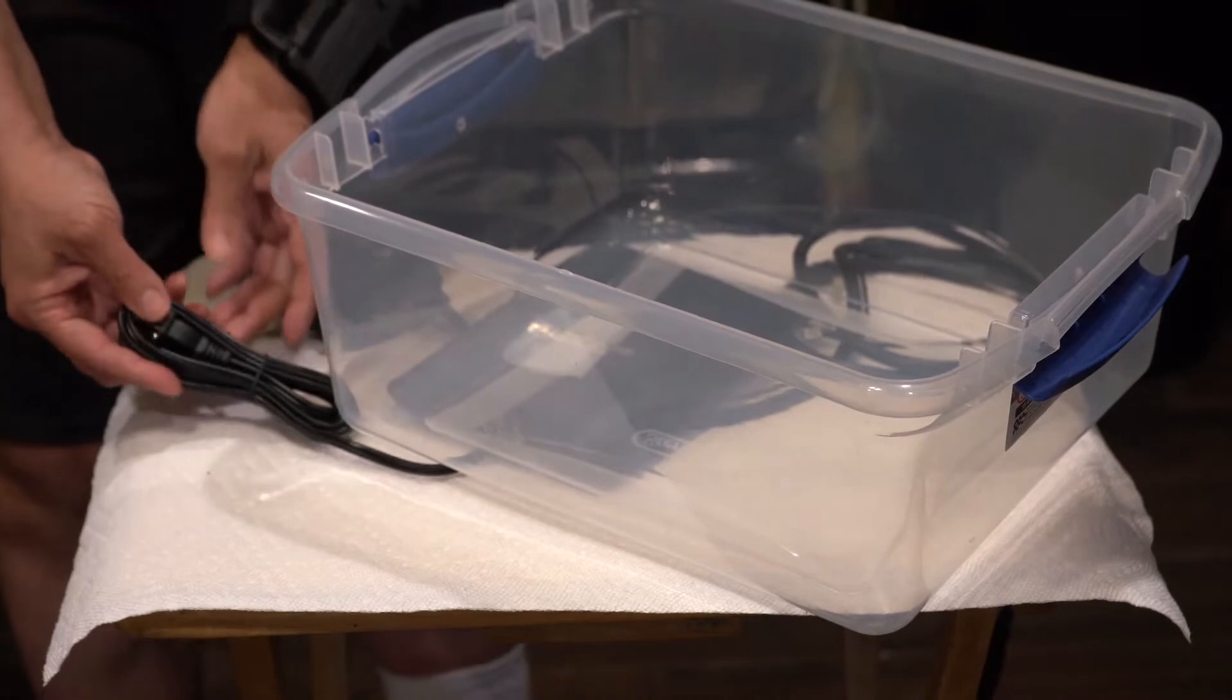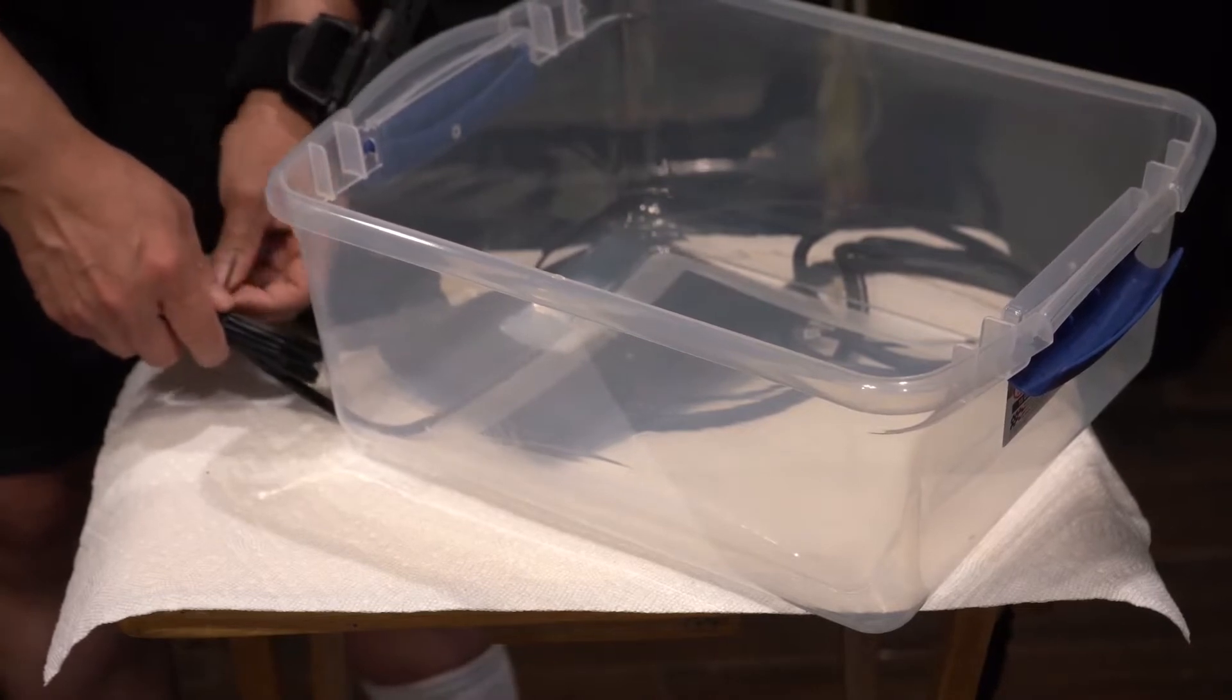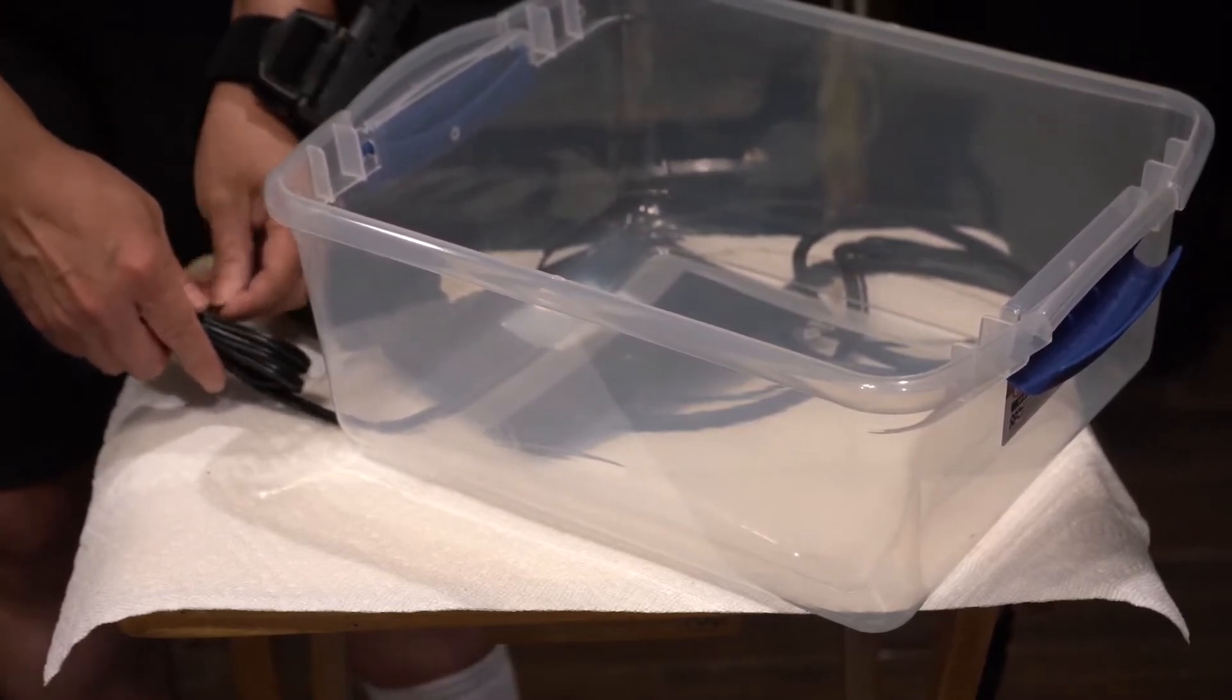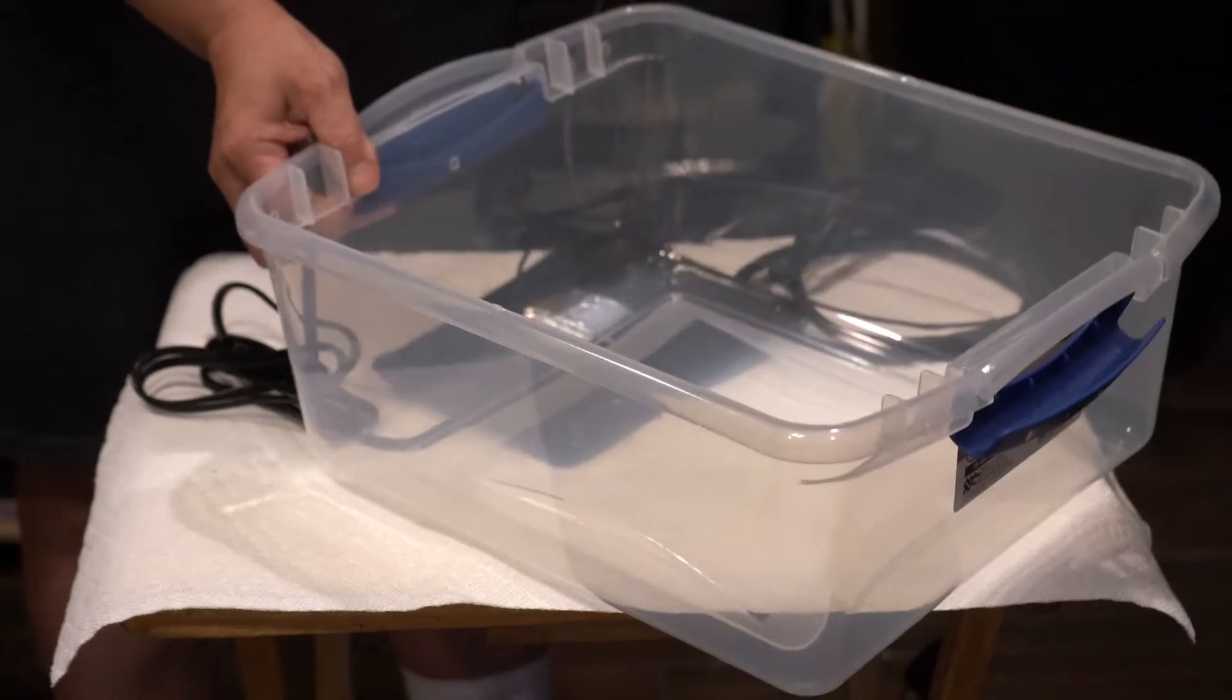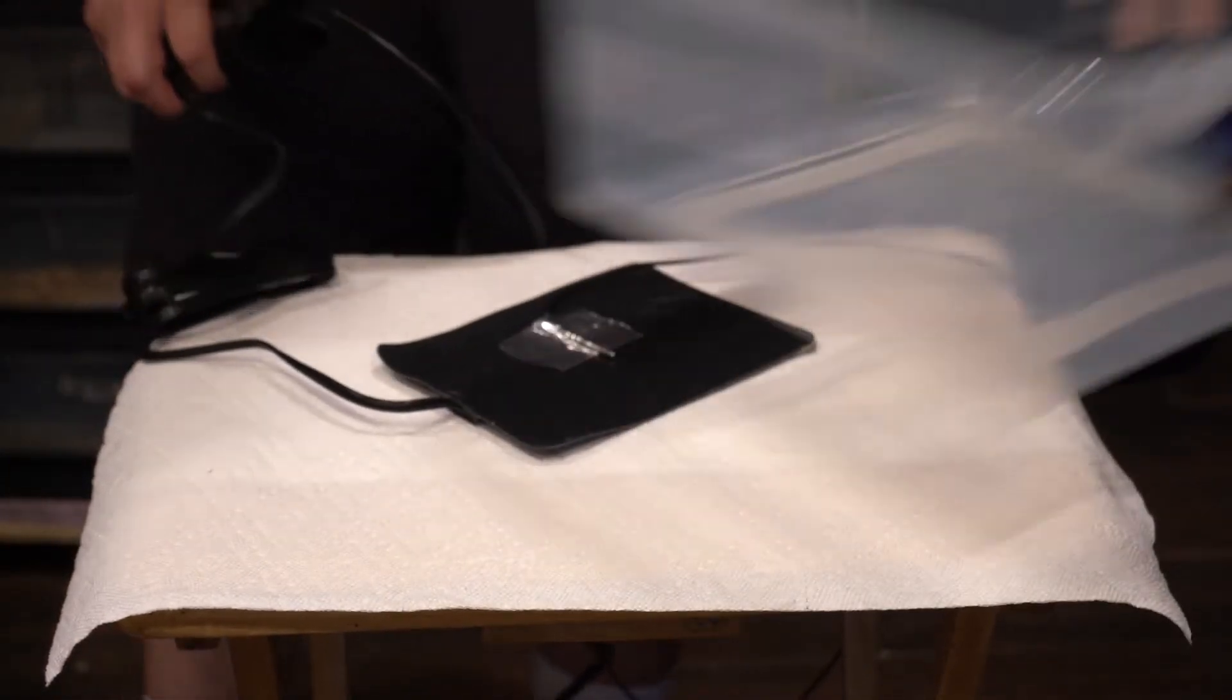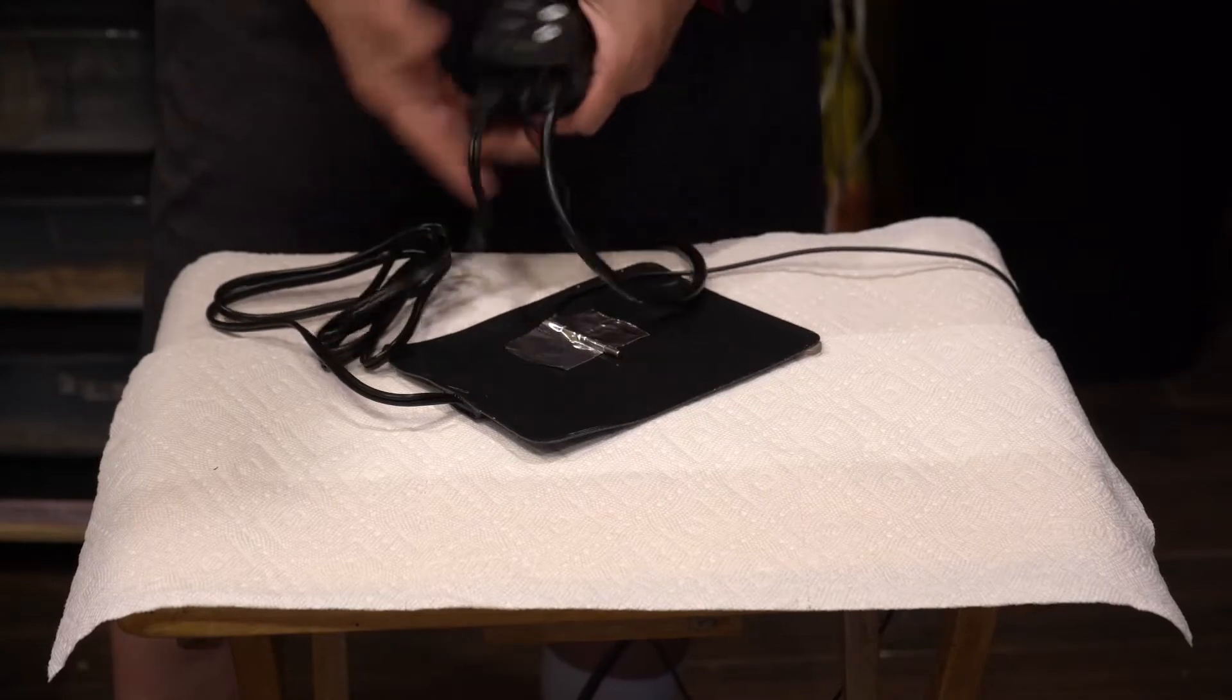Then you're going to get your cord for your heat mat and plug it in to your thermostat. The only thing that gets plugged into the wall is the thermostat. So you take your cord for your heat mat and plug it in to your thermostat. If you look at the bottom of your thermostat, you have a place for a plug. Your plug goes right in the bottom of that.